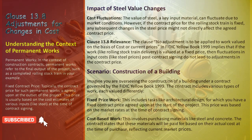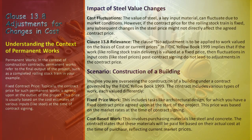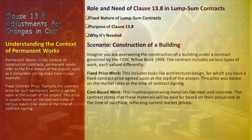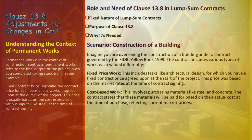In lump sum contracts, the contractor agrees to complete the work for a fixed price, based on estimates of costs for labor, materials, equipment, and other necessary expenses. The price schedule in these contracts details the costs of different work components, filled out by the contractor during the bidding process, forming the basis for the lump sum price. The defining feature of a lump sum contract is its fixed price: once set, this contract price generally remains unchanged regardless of the actual costs incurred. Clause 13.8 is integrated into such contracts to manage significant changes in the cost of labor, materials, and other inputs due to market dynamics, offering a structured method to modify the contract price.